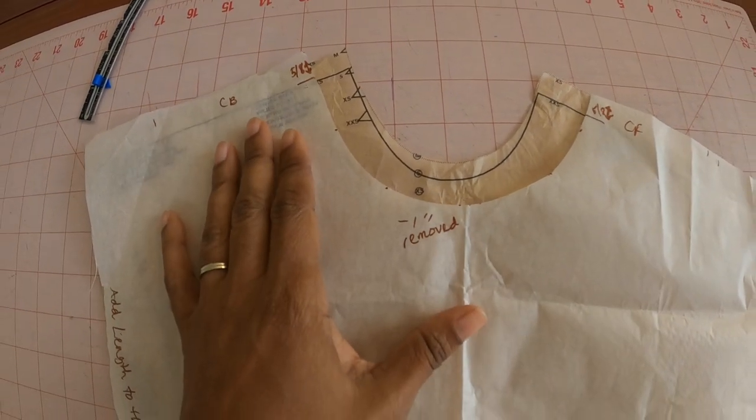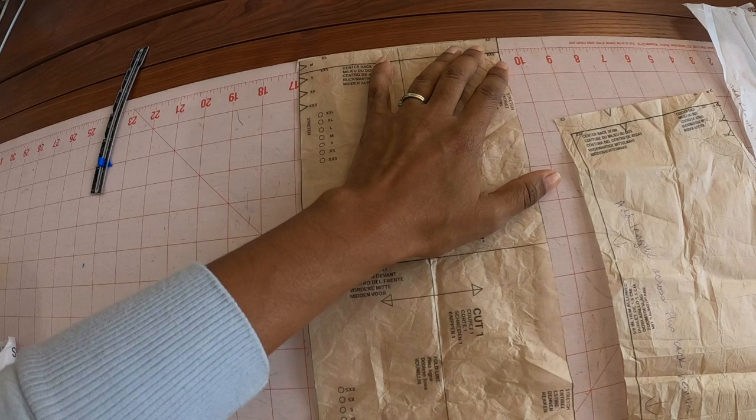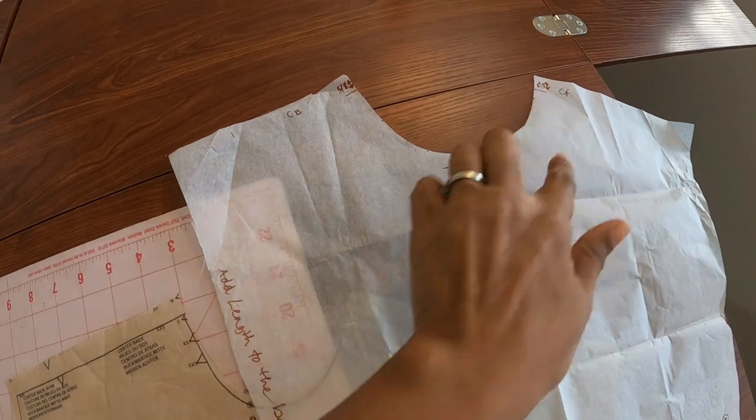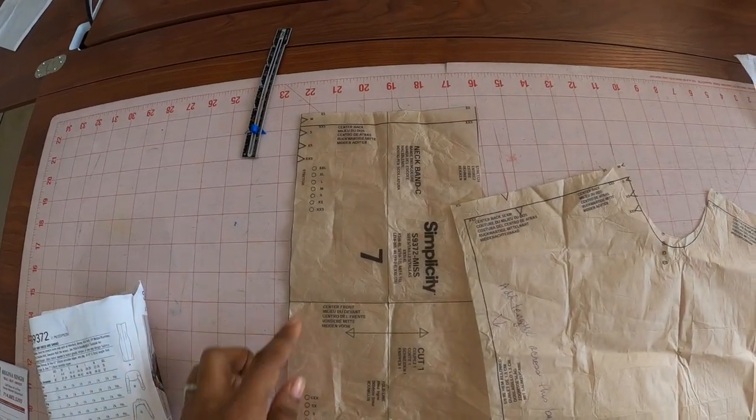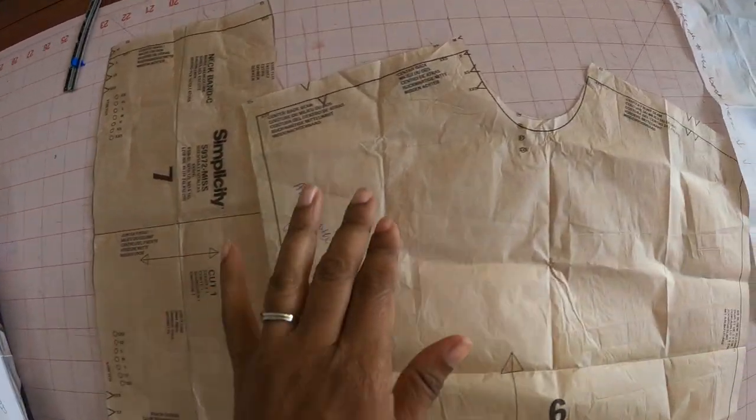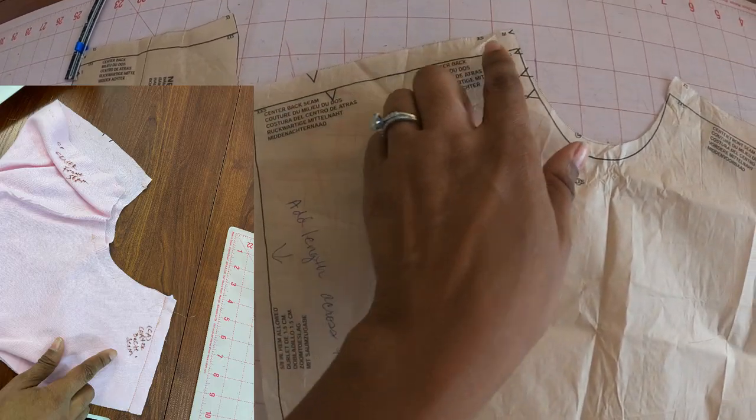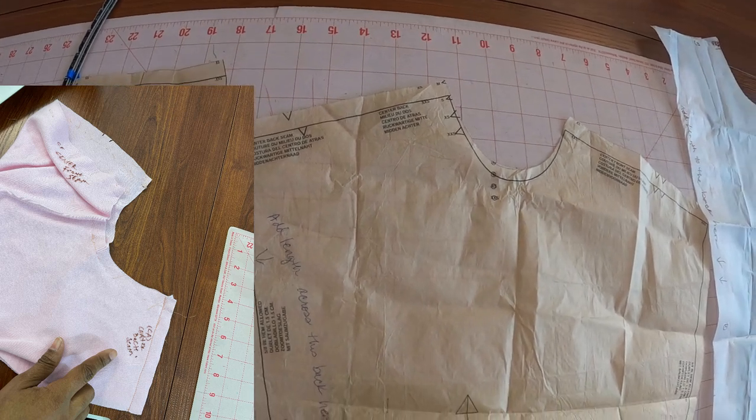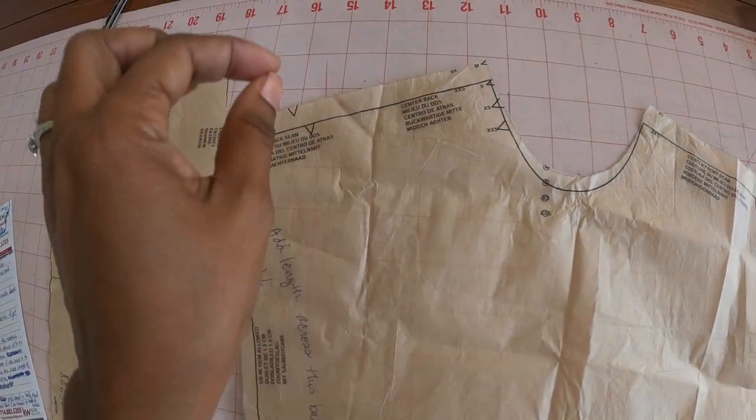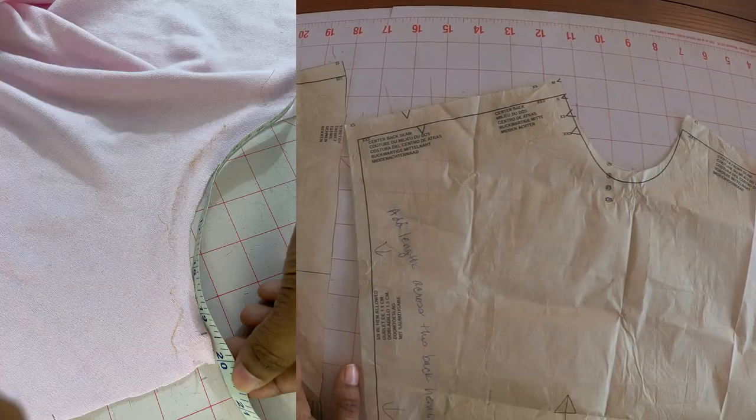Next I went to the neckband piece and I had to lengthen the neckband piece to match the neckline. In order to determine how long the neckband piece needed to be lengthened to, I cut everything out. Then you want to sew up the center back seam. After the center back seam is sewn up, then you can measure around the neckline of your bodice piece.